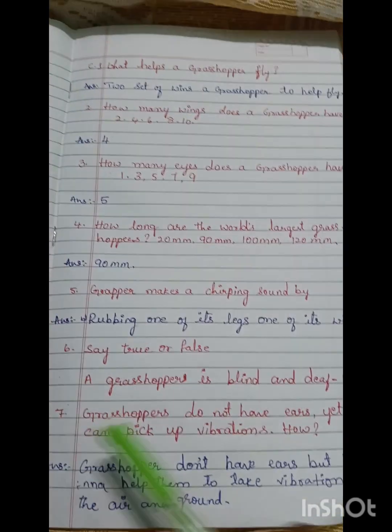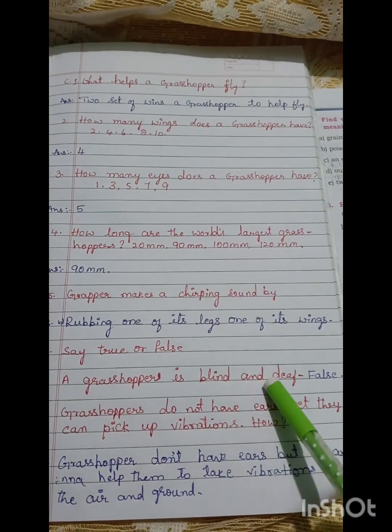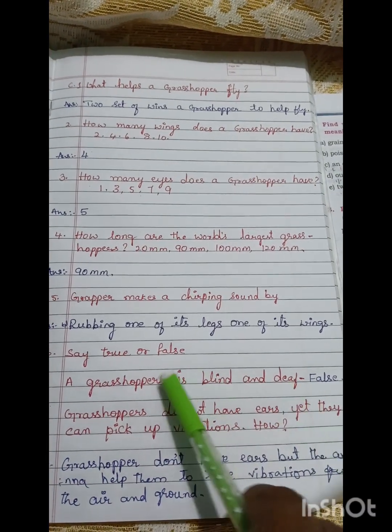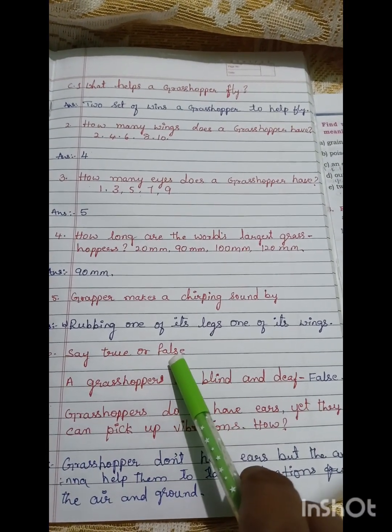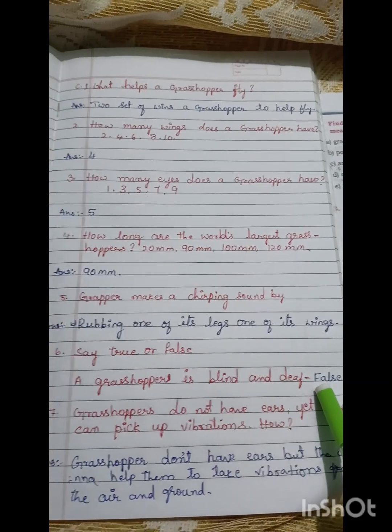Say true or false: a grasshopper is blind and deaf. It is true or false? We can say here it is false.